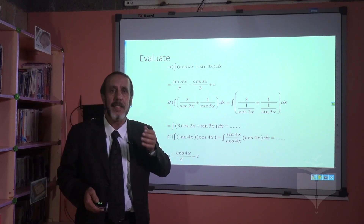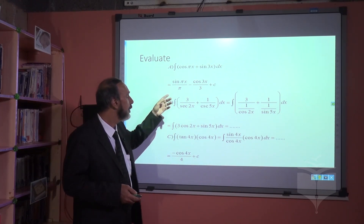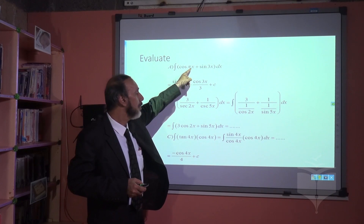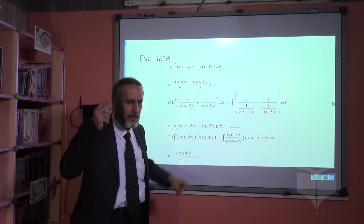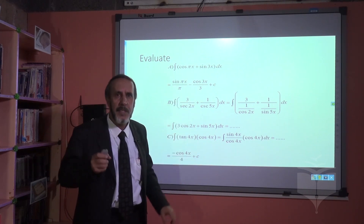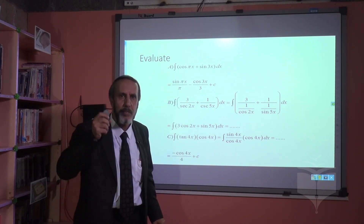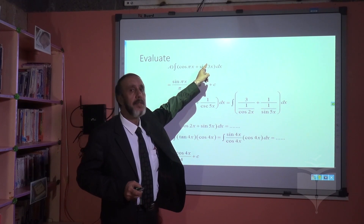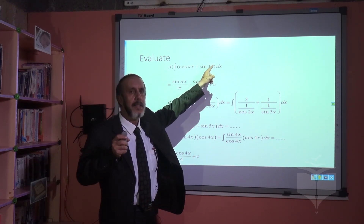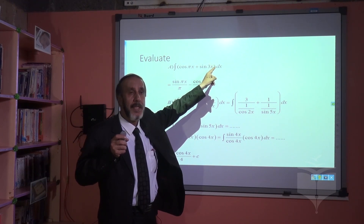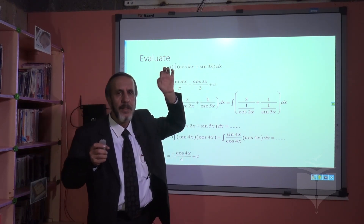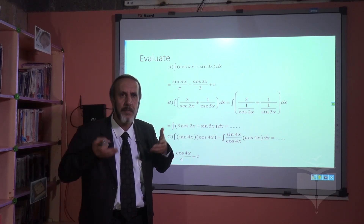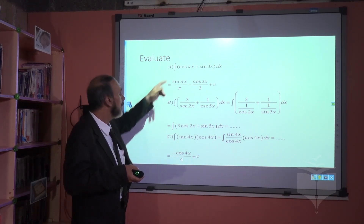Evaluate the following integrals, question number a: cosine. What is the power of cosine? One. What is the power of variable x? Also one. The first term is in standard form, and we have addition. The second term is sine — the power of sine is one and the power of the angle x is also one. So we can integrate directly; there is no need to use the substitution method.